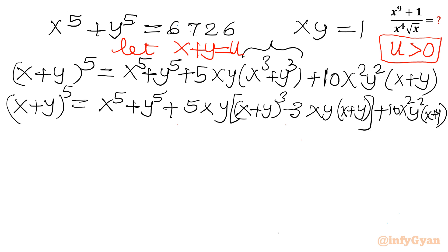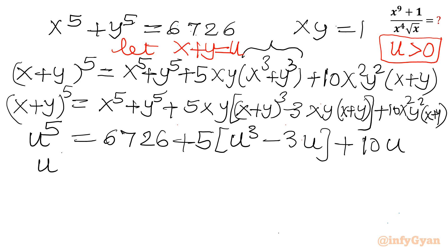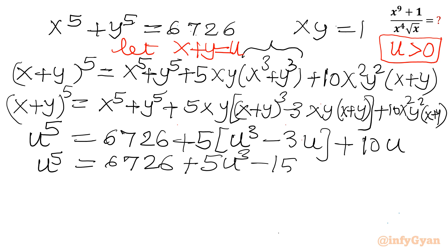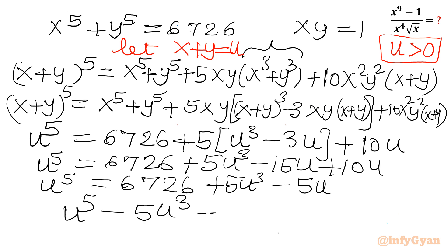Applying the substitution, u^5 equals x^5 plus y^5, which is 6726, plus xy equal to 1, so we write: 5 times [u^3 minus 3u] plus 10 times 1 times u. This simplifies to u^5 equal to 6726 plus 5u^3 minus 15u plus 10u. Combining terms: u^5 equal to 6726 plus 5u^3 minus 5u. Taking all terms to the left hand side gives the quintic equation: u^5 minus 5u^3 plus 5u minus 6726 equal to 0.